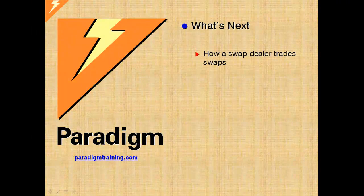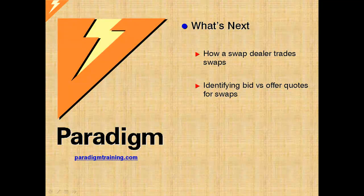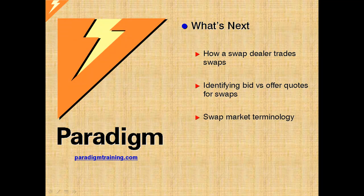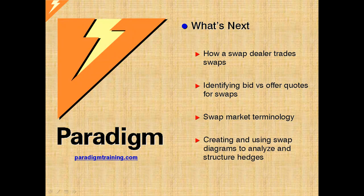In upcoming modules in the series, the role and methods of the swap dealer will be explored. That will entail understanding quoting conventions for swaps. The terminology in the swap market can be confusing — the trader jargon will be demystified. And these box and arrow diagrams are essential in the derivative trading and hedging business. We will learn to create and analyze the configurations in this graphic language.